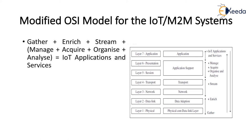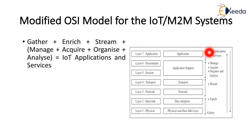New applications and services are present at the application layer. The application support layer uses Layer 5 with the help of protocols such as CoAP, the Constrained Application Protocol. IoT applications and services commonly use these protocols for network communication. CoAP at the application layer is used for request-response interaction — between the client and server, the server responds to the client's request. The application support layer includes the process of managing, acquiring, organizing, and analyzing data for application purposes and services.